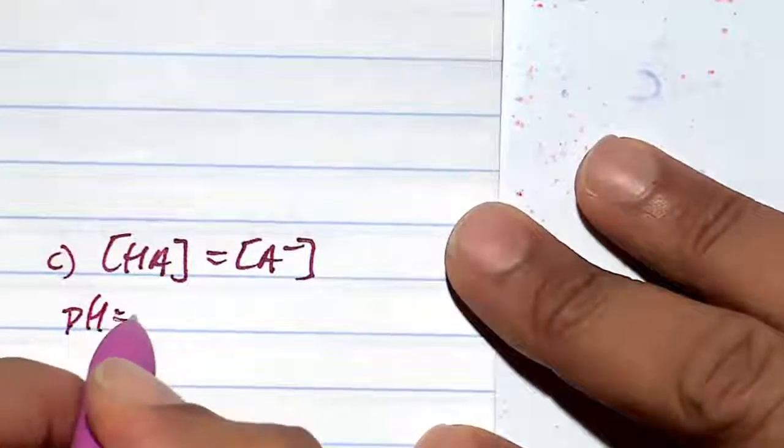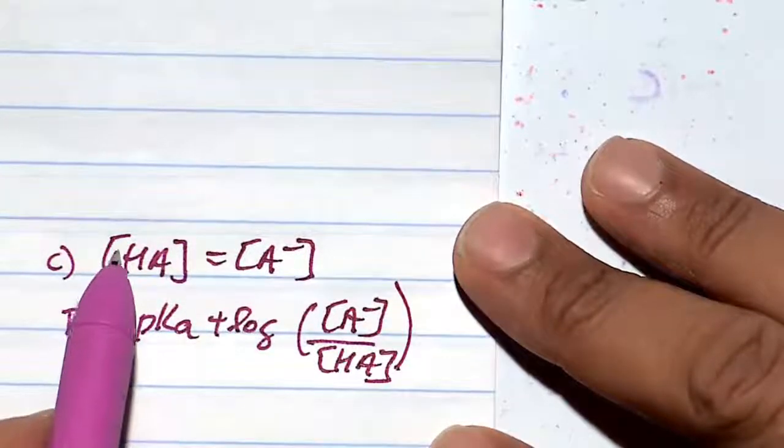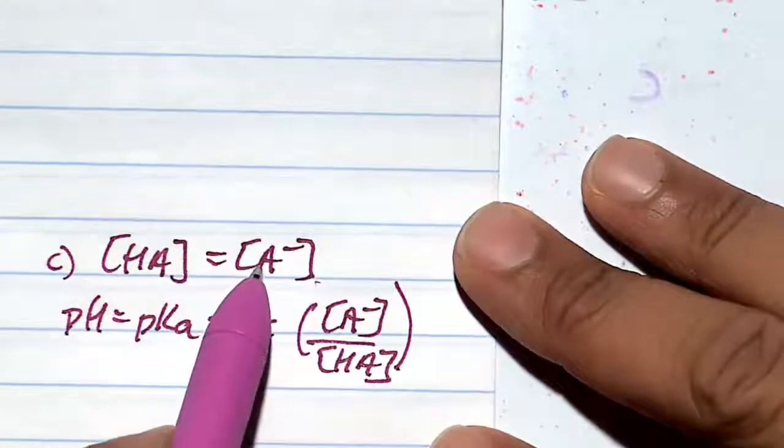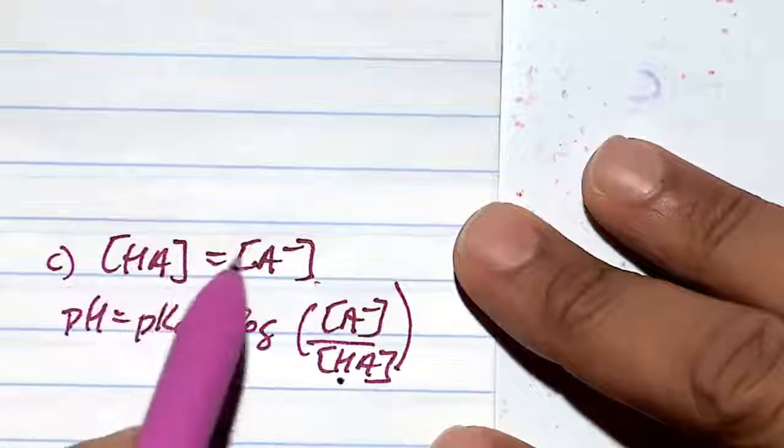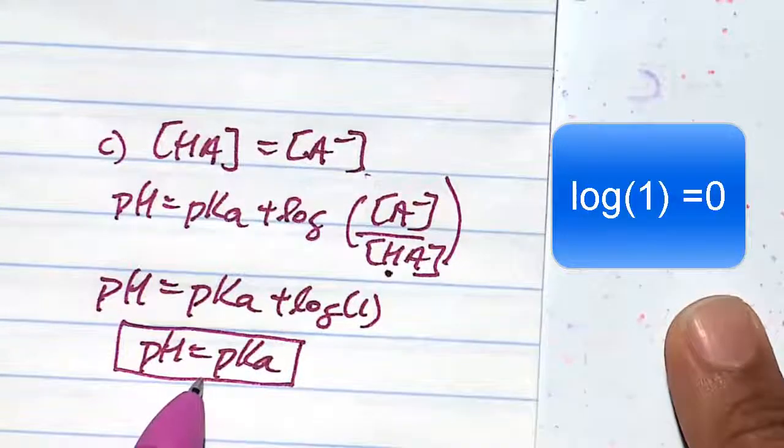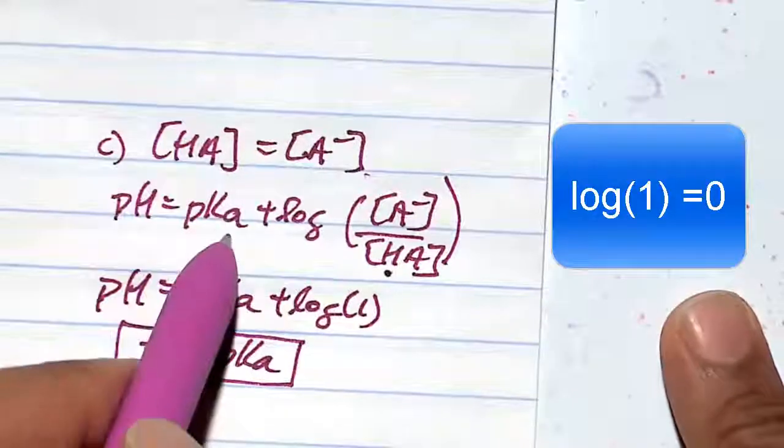In a situation where HA equals A-, let's look at our Henderson-Hasselbalch equation again. When they both equal one another, they essentially cancel each other out. When the conjugate base is equal to the conjugate acid, the pH is equal to the pKa of that proton.